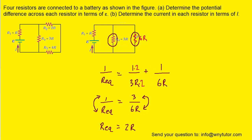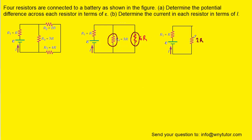We combine those two parallel resistors into a single equivalent resistor of 2R and simplify the drawing. We notice that this 2R resistor is in series with R1. Since they're in series, we add their resistances: R plus 2R equals 3R. We combine them into a single resistor, giving us our fully simplified circuit.